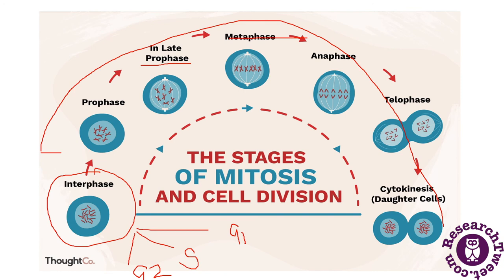In anaphase, the spindle fibers move toward the ends of the cell. The sister chromatids of each metaphase chromosome are attached to kinetochore microtubules, with opposite ends of those microtubules associated with one of the spindle poles. The kinetochore microtubules pull the two kinetochores toward opposite poles.